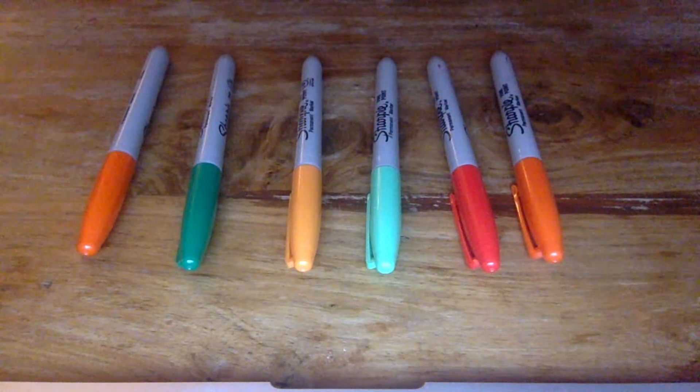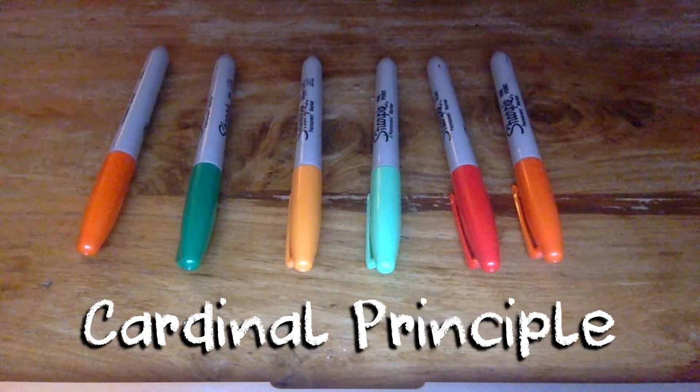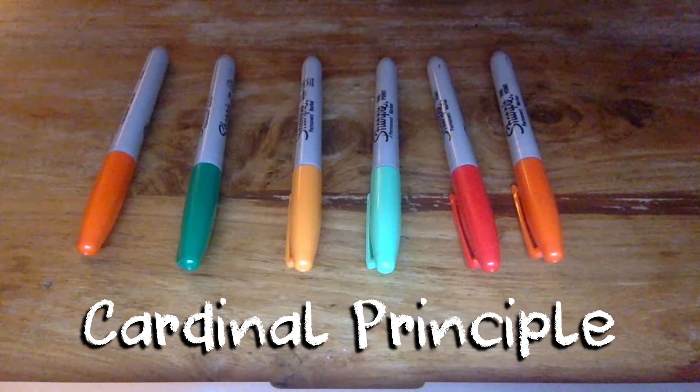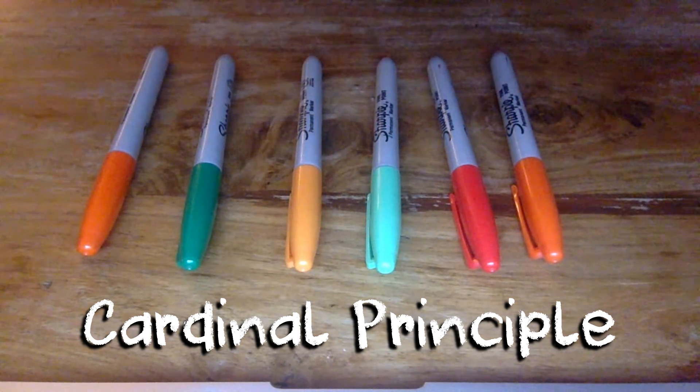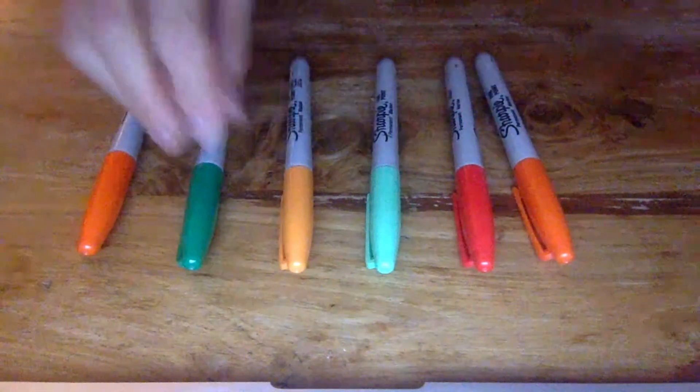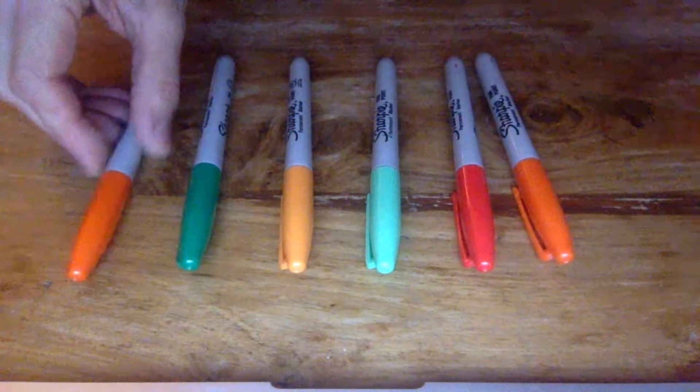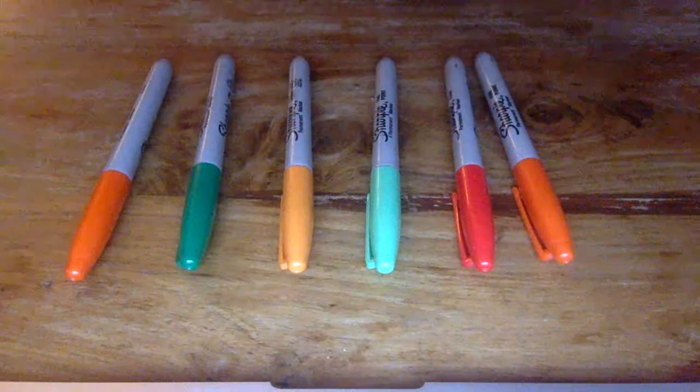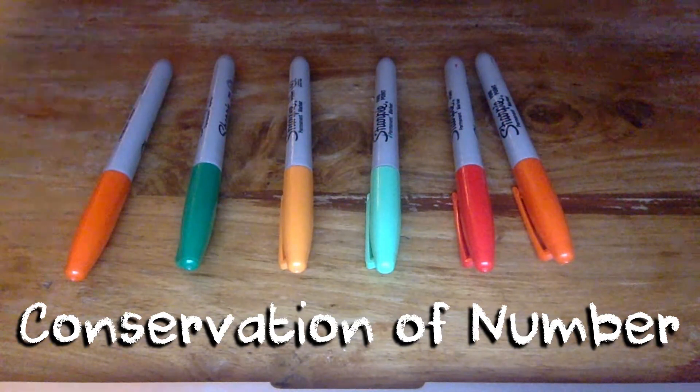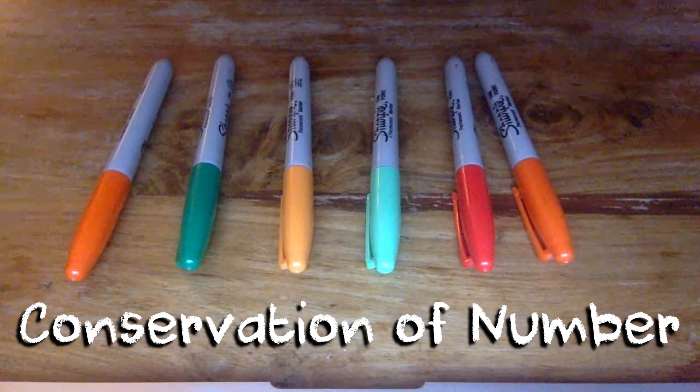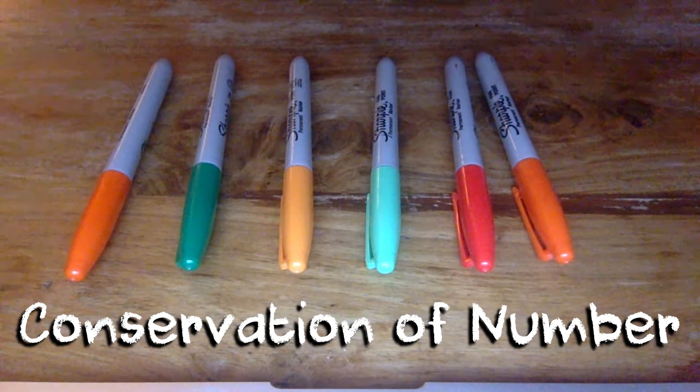And this is largely down to the understanding of the cardinal principle. Now this is an understanding that the final number said when counting a group tells the counter how many objects are in the group. So one, two, three, four, five, six, six is the number in that group. And conservation of number tells us that this number does not change even if we move the number of objects around. For example, ask a child which group has more.